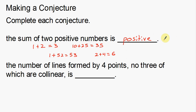Notice that what we did was we had to come up with examples — prior experience — to help us make this conjecture. We used all of those examples to figure out what conclusion we were trying to come to. Now, the next example: the number of lines formed by four points, no three of which are collinear, is something.